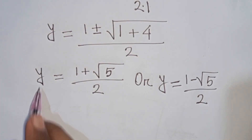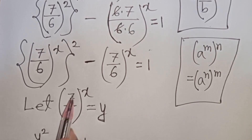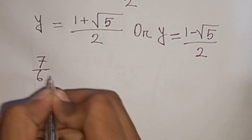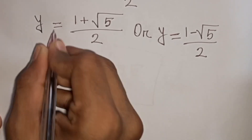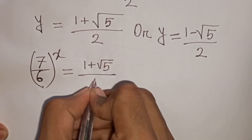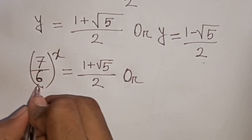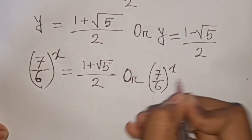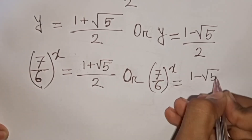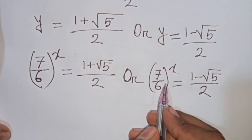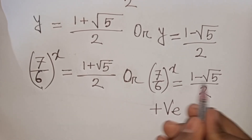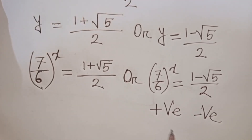Remember that y equals (7/6) to the power x. Any number raised to a power is always positive. But (1 − √5)/2 must be negative, so positive cannot equal negative. Therefore we reject that case.